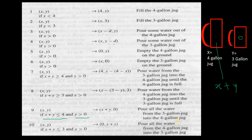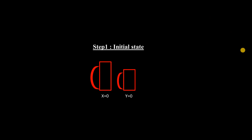Rule 10 is pouring all water from the 4-gallon jug to the 3-gallon jug — the same concept as rule 9 but in reverse. All the rules are now clear.